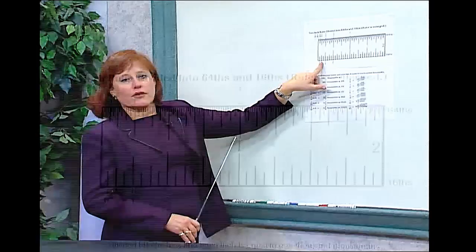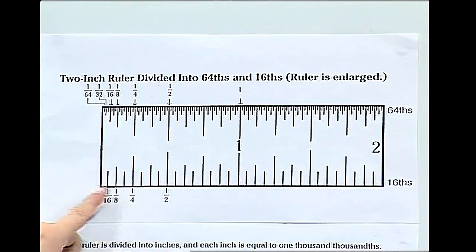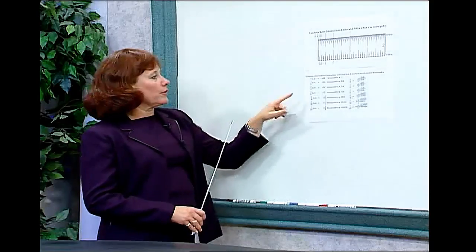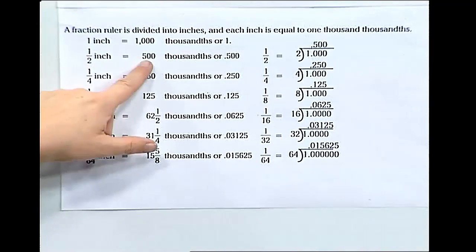Just as in the sixteenths, we can divide the ruler into smaller portions. For example, a half an inch, we can divide the thousandths into smaller increments. If we look at a half inch in a ruler, it would be divided into half as many spaces or five hundred thousandths of an inch.